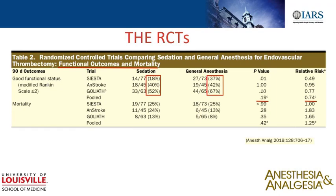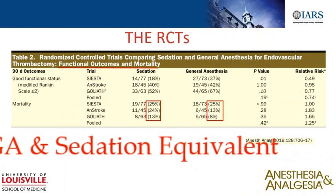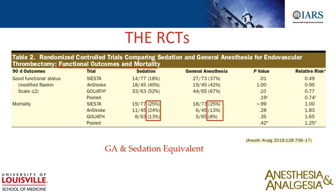Looking at the randomized controlled trials for functional outcomes and mortality: at 90-day outcomes, functional independence defined by modified Rankin score of two or less, general anesthesia tended toward better outcomes — 37 to 67% versus the sedation group's 18 to 52%, with a pooled relative risk of 0.74. For mortality, the picture is similar: 8 to 25% with general anesthetics versus 13 to 25% in the sedation group — pretty much equal, with a slight tendency toward the general anesthetic group.